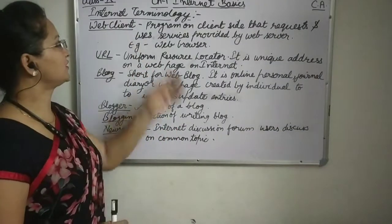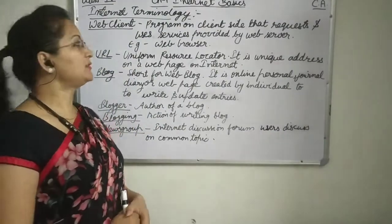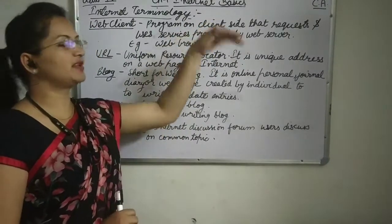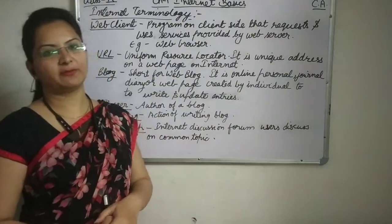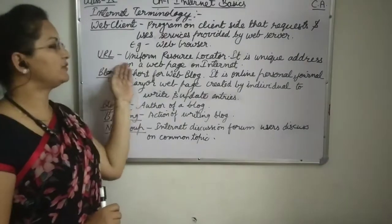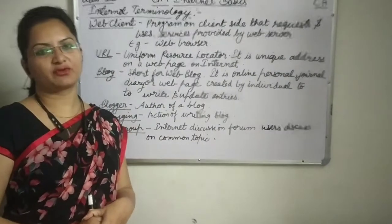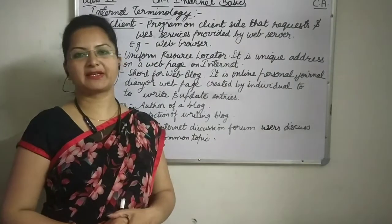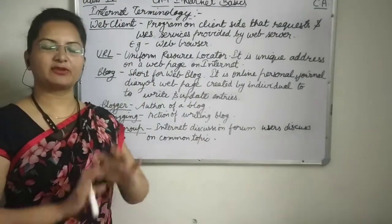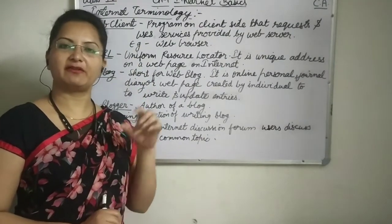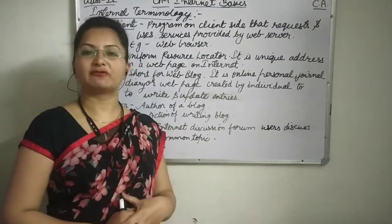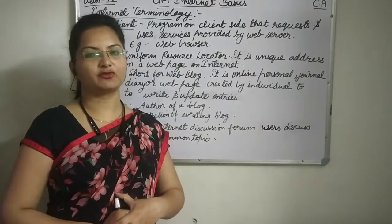There are a few more internet terminologies. Web Client means the software that is on the client computer — on the client side — and it is used to send and receive requests from the web server. The example of it is the web browser. Then we have URL. URL stands for Uniform Resource Locator. Every website and every webpage have a unique address on the internet, and that is the URL. If we have to open any webpage or website, we type the address in the address bar of the web browser — that is known as the URL.